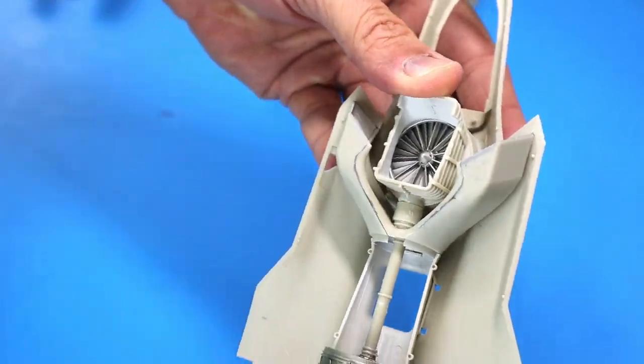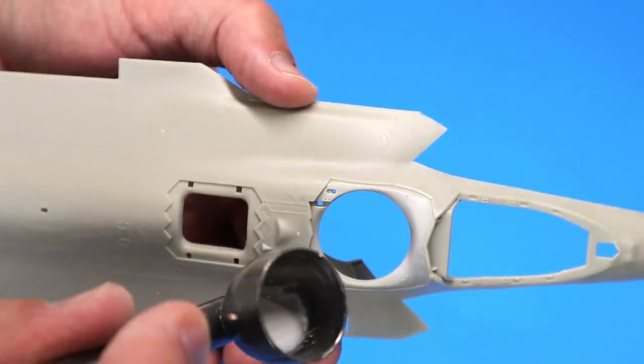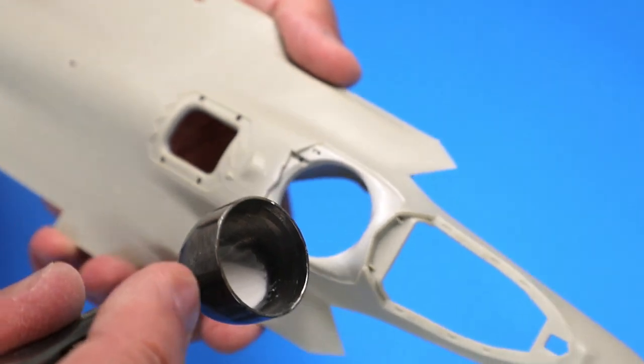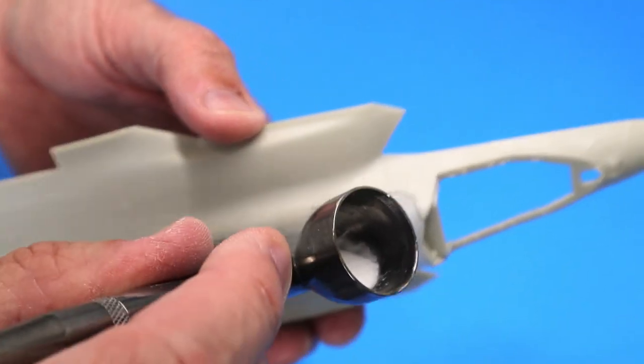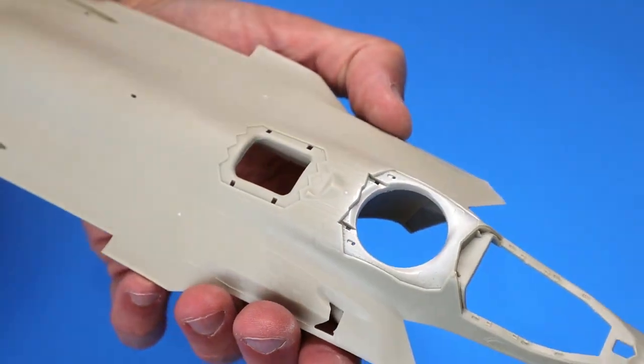Before I attached the lift fan to the top of the fuselage piece, I airbrushed the surrounding areas with Tamiya Gloss White. I then glued the lift fan turbine in place, but left the intake assembly, including the louver section, off so that I could test fit that with the forward and main fuselage sections.